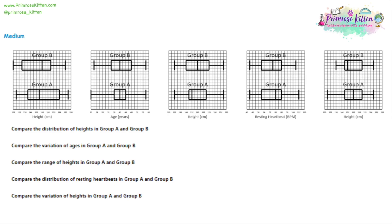The first thing to talk about is distribution — looking at the pattern of that middle box. The middle box is separated into two halves: the positive half, which has the higher values (shaded in green), and the negative half, which has the lower values. Together they represent the middle 50% of people. When comparing distribution, we are comparing the balance between the positive and negative halves.